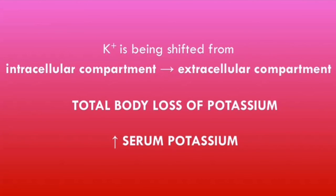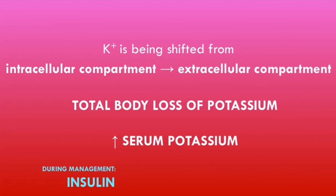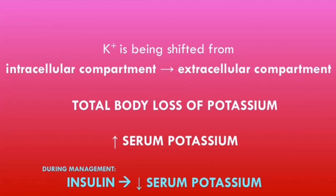Patients can also develop potassium abnormalities during the management of DKA. Part of DKA management involves giving fixed-rate infusions of insulin. Insulin will help correct the hyperglycemia, ketonemia, and acidosis, but it will also lower the serum potassium levels by stimulating the sodium-potassium ATPase pumps and causing potassium to shift from the blood into the cells. This helps restore intracellular potassium levels; however, the serum potassium level will continue to decrease, increasing the risk of the patient developing hypokalemia. This is why it's very important to regularly monitor serum potassium levels when patients are being managed for DKA.